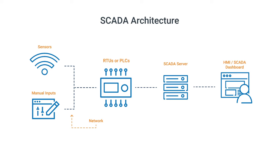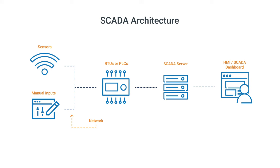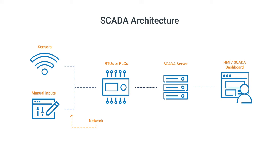Implementing a SCADA solution starts by clearly defining and understanding what you want to monitor. From there, you'll need to determine what data you're currently collecting and how. The next step is to add the hardware and software necessary to connect the dots. Remote terminal units, RTUs, or programmable logic controllers, PLCs, are often put in place to serve as local collection points for gathering sensor information and sending it to the SCADA server or HMI.